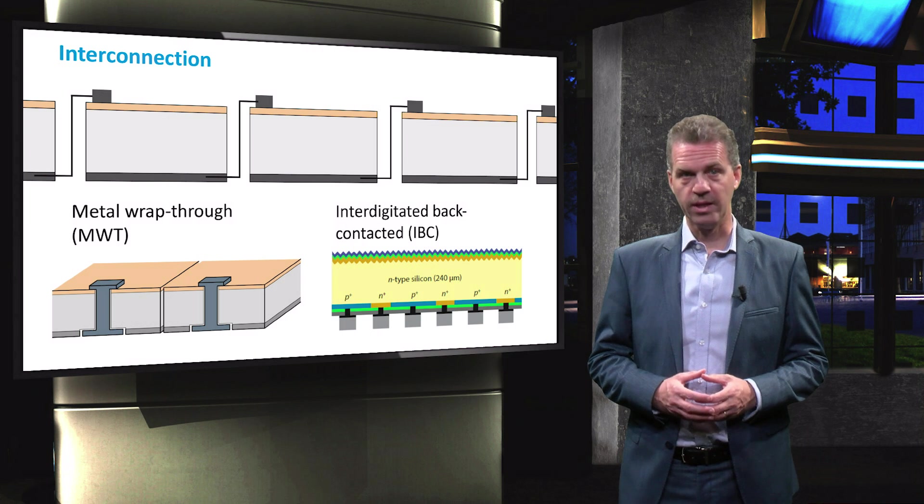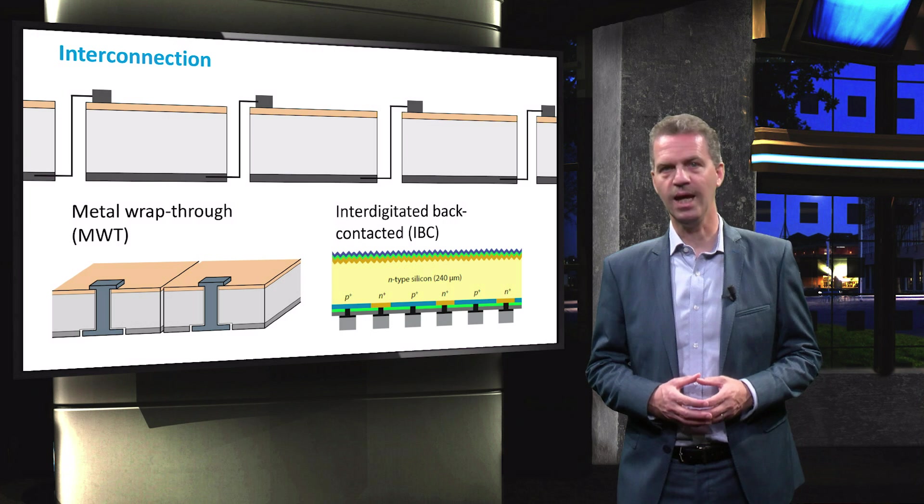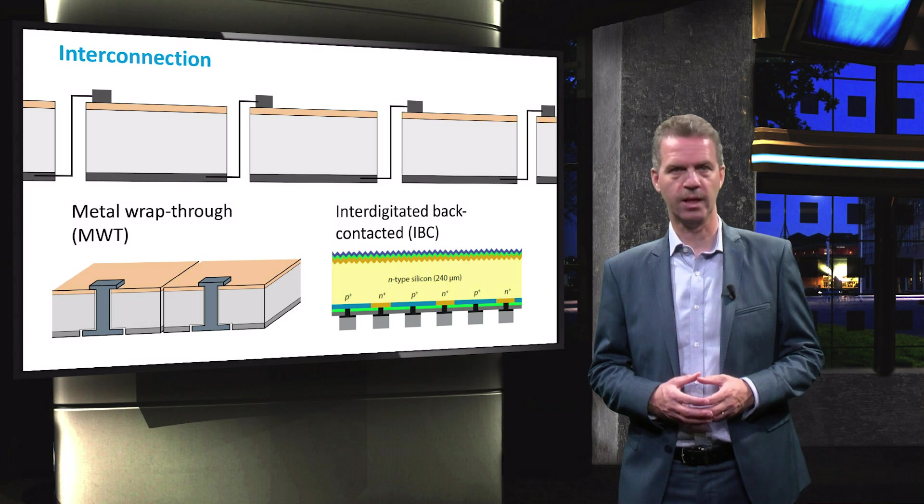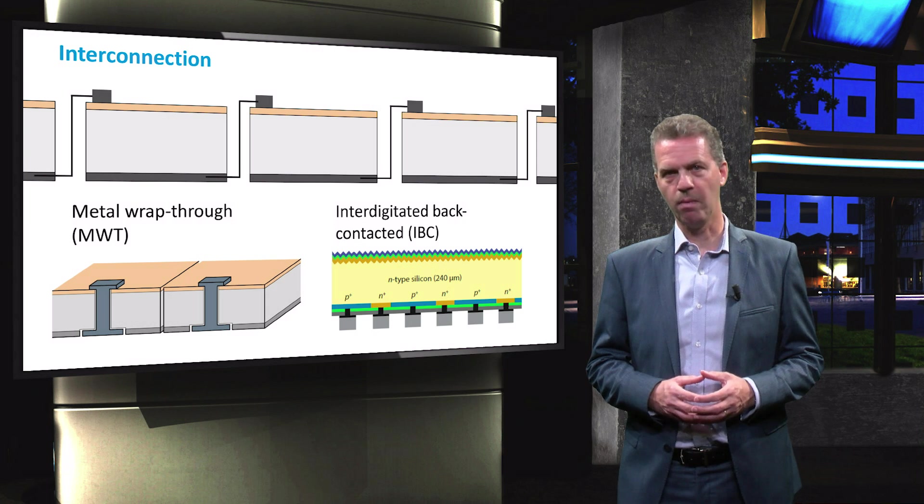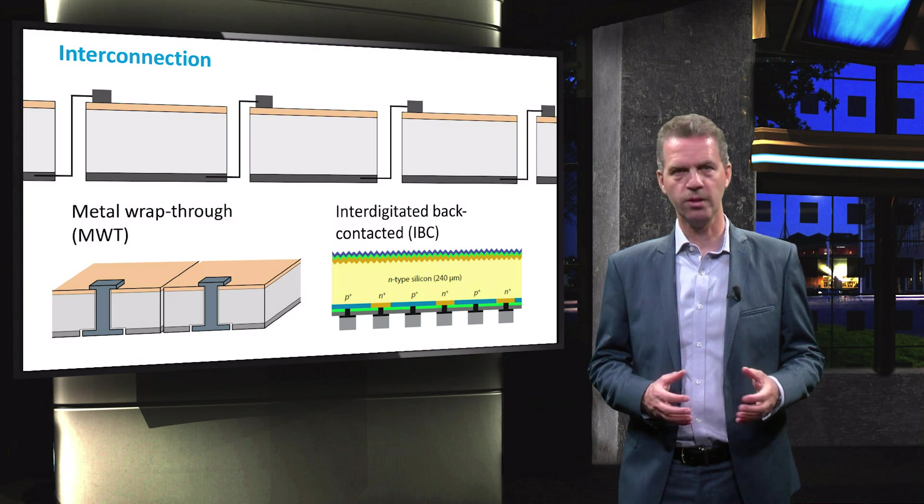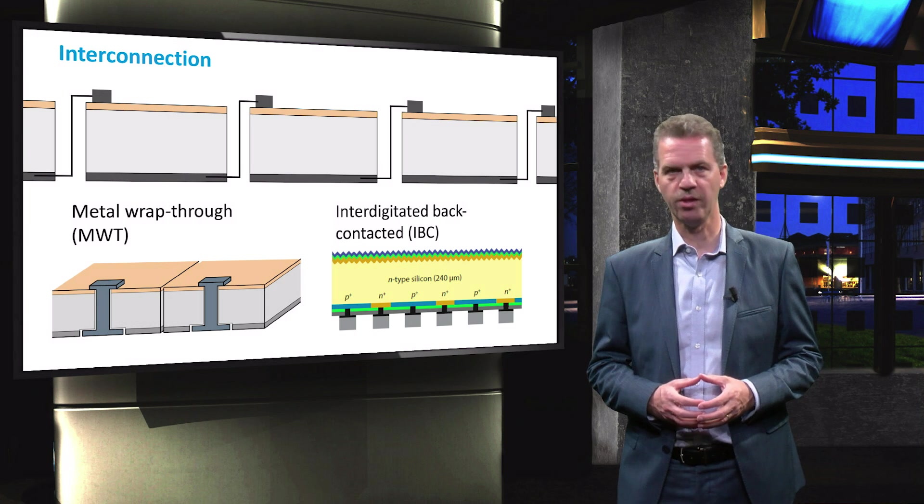A more advanced way to place all contacts at the back side of the solar cell is found in the interdigitated back-contactor technology. Both the electrons and holes will be collected at the back side of the cell by alternately placing P-plus and N-plus layers that serve as selective contacts.